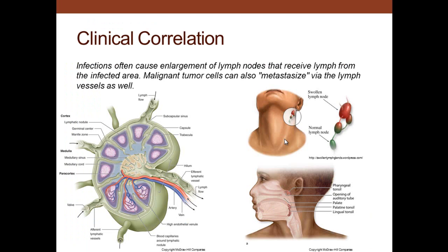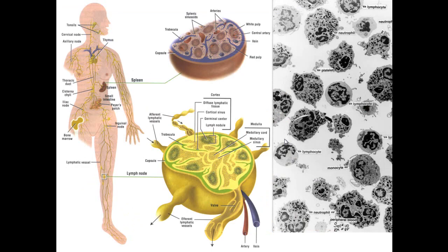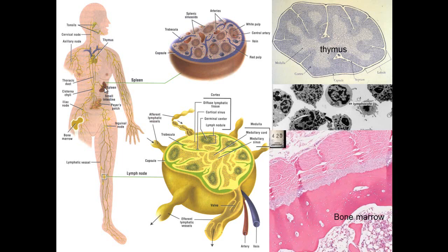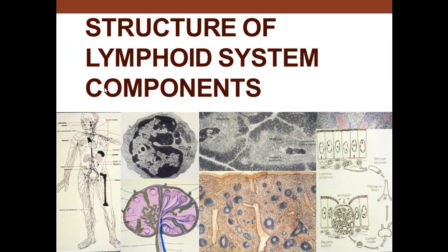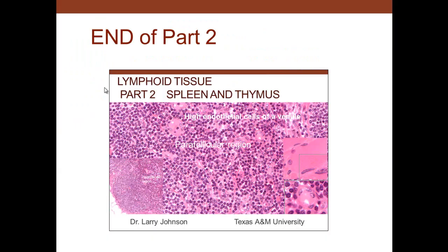In clinical correlation, infections often cause enlargement of lymph nodes, and malignant tumor cells can metastasize via lymph node vessels — which is why sentinel lymph nodes are removed in cancer cases. Lymphoid tissue is distributed throughout the body: thymus, spleen, digestive tract, respiratory tract, bone marrow, and lymph nodes are all key players. Thymus and bone marrow are the primary sites for T and B cell development. That ends part two on lymphoid tissue — spleen and thymus.